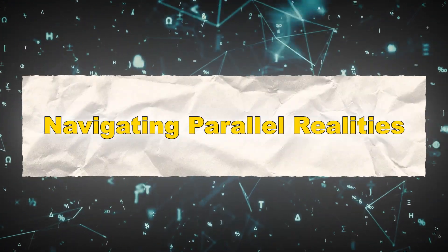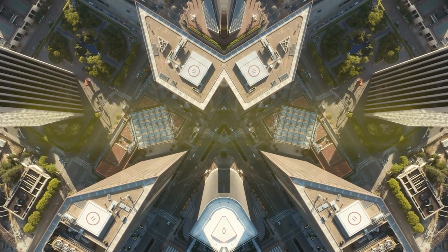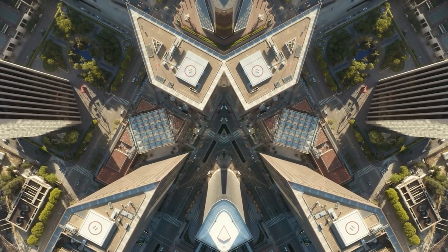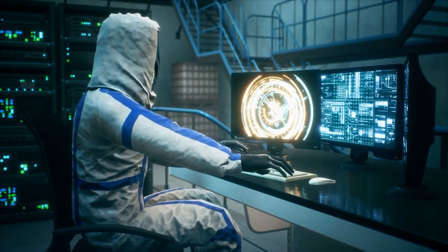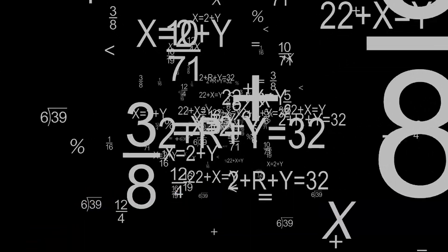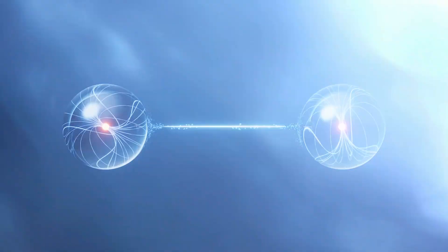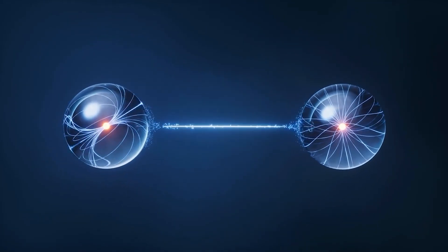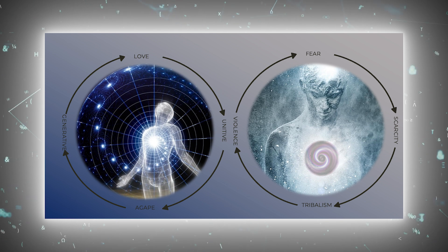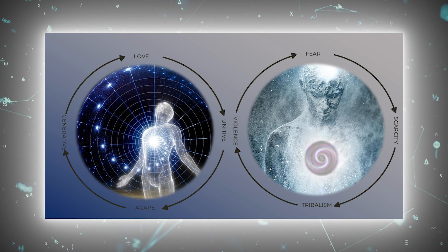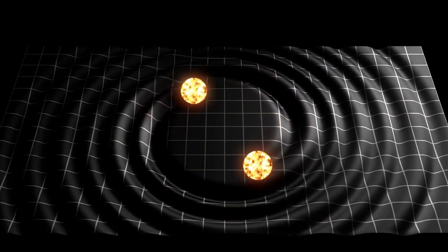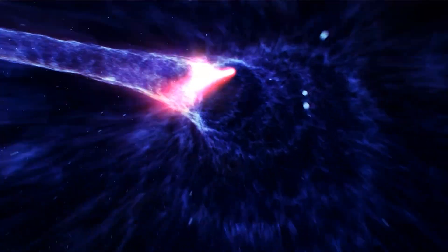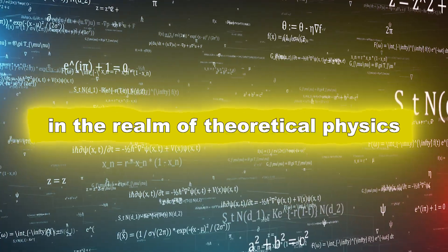Navigating parallel realities is a topic that often ventures into the realm of science fiction. However, some physicists have proposed theoretical methods for interacting with parallel universes. One such idea involves quantum entanglement, where particles become interconnected in such a way that the state of one instantly influences the state of another, regardless of distance. Some speculate that entangled particles could be used to communicate or even travel between parallel realities, although this remains firmly in the realm of theoretical physics.